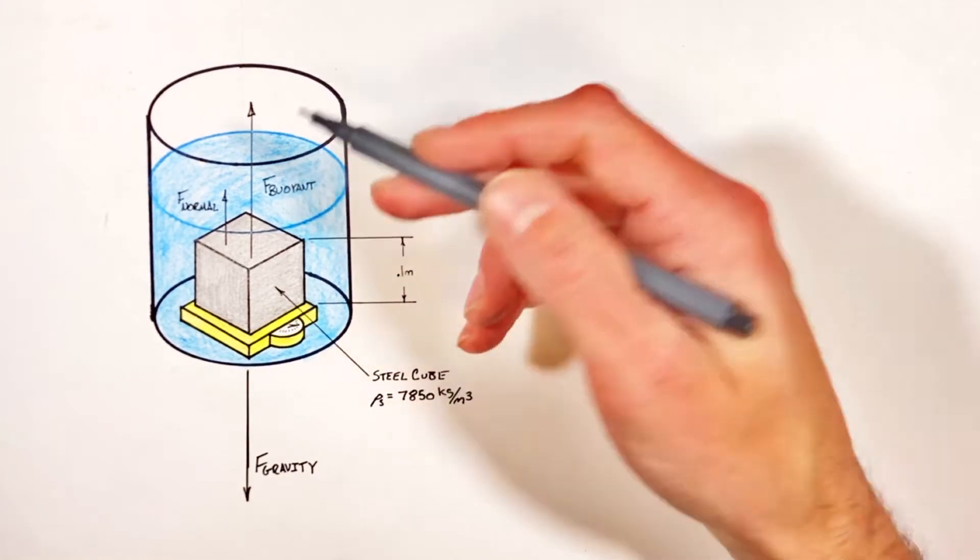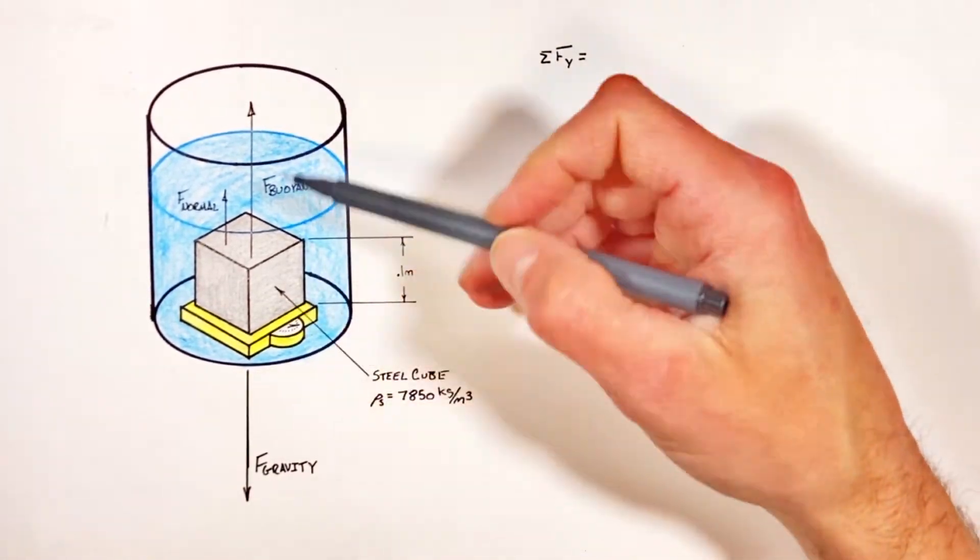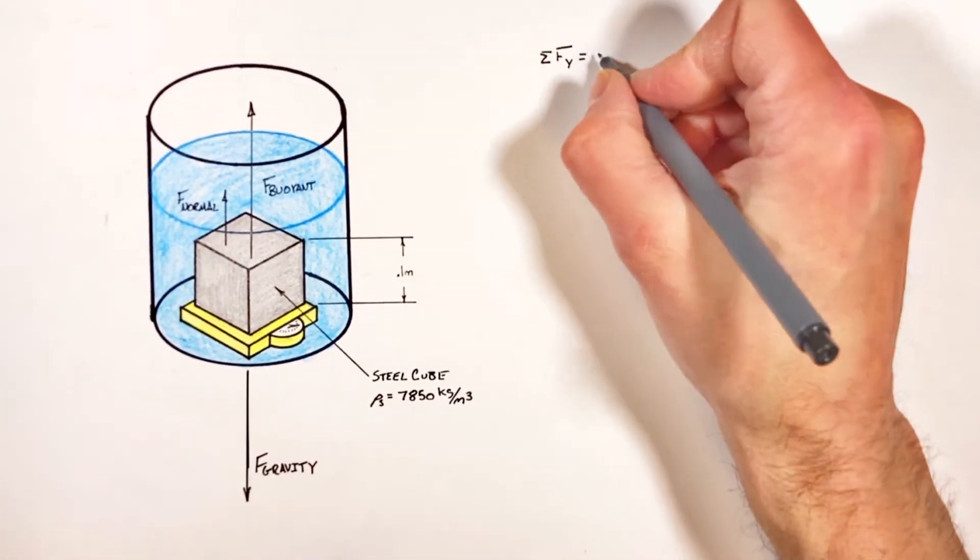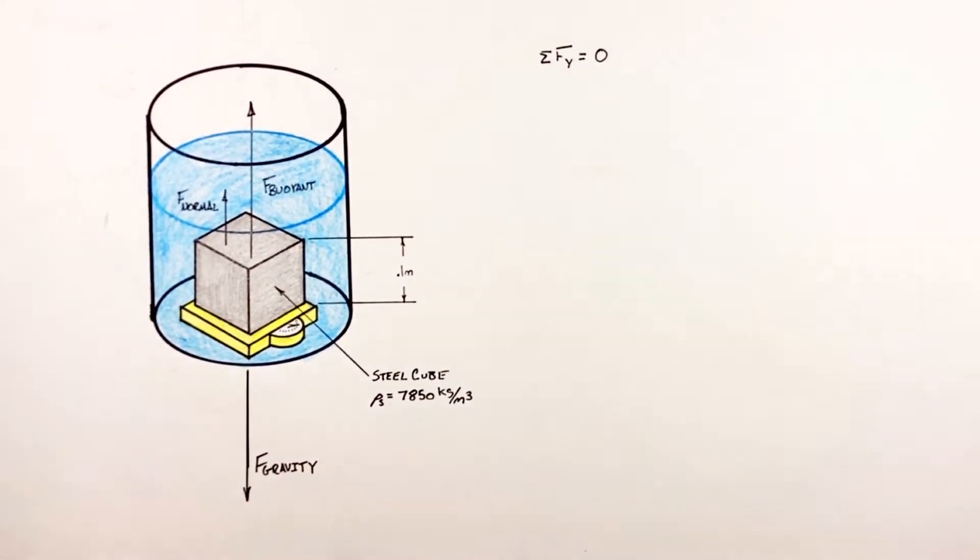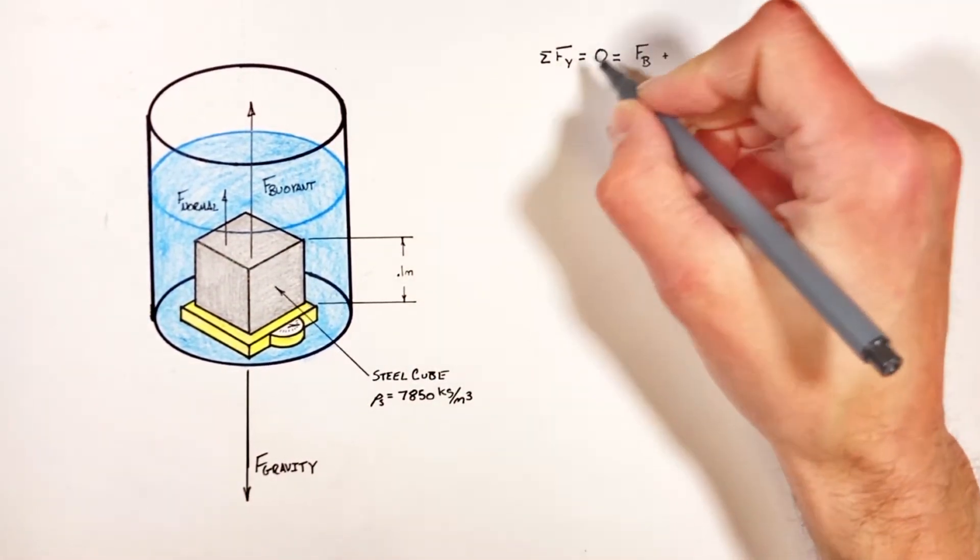Because the block is not accelerating vertically, the sum of all forces in the y-axis is zero. So there's going to be a buoyant force upward plus a normal force upward minus the force by gravity downward.